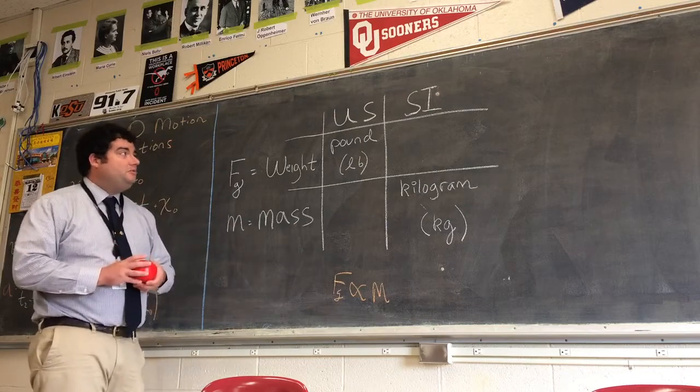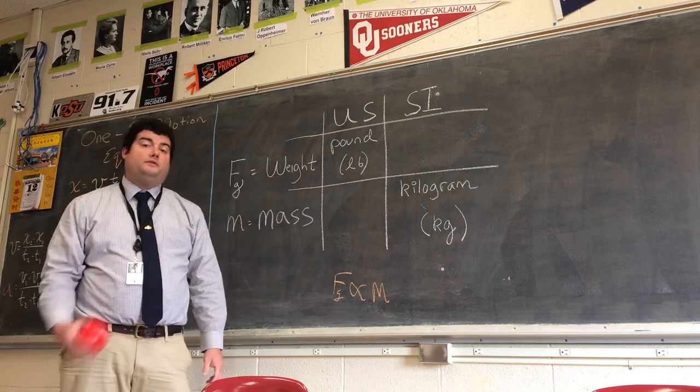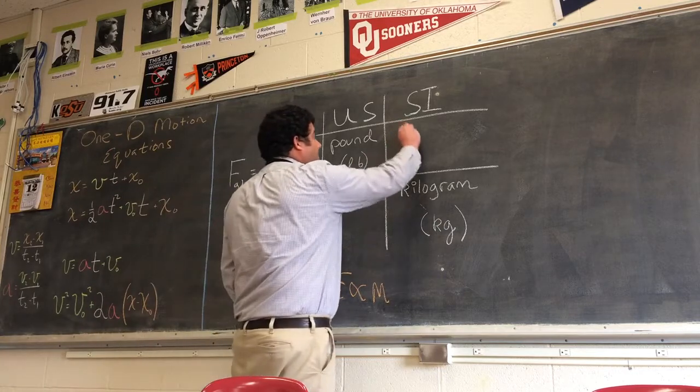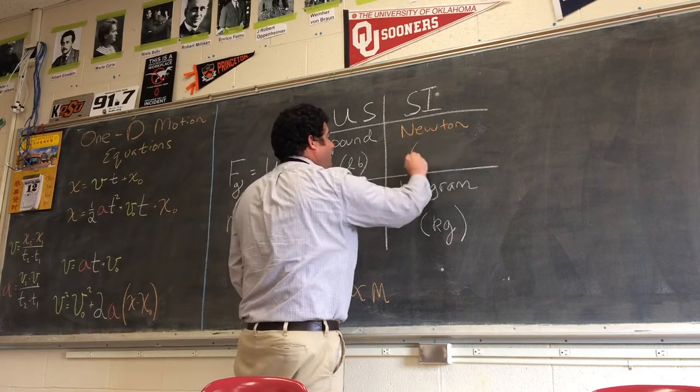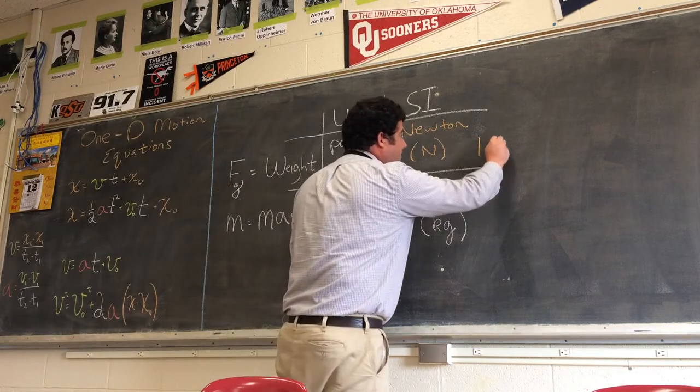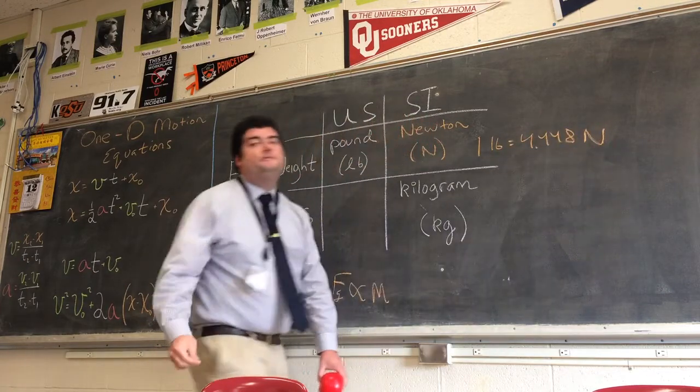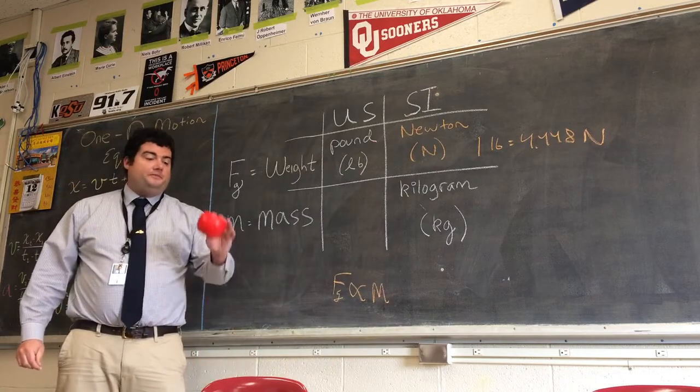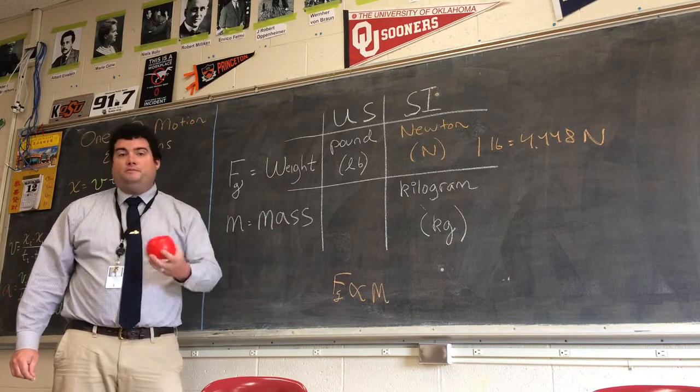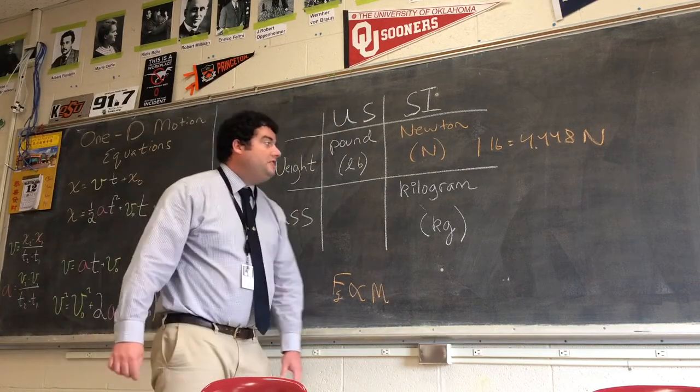So, there's two other units we should learn. We should learn the metric SI unit that we're going to use in class for weight, or for all forces. It's called the Newton. And one Newton, or one pound, is 4.448 Newtons. So, a Newton's about a quarter pound. In class, you'll see this little foam apple. Everyone can toss it around. It weighs a Newton. Also, think of a quarter pounder with cheese. That's a Newton. We'll use that all the time.